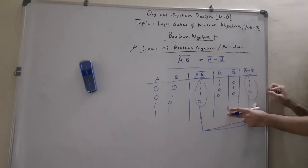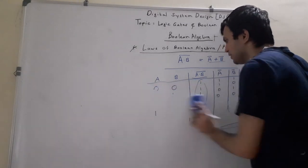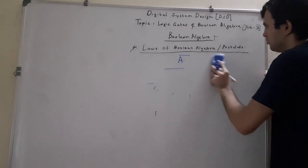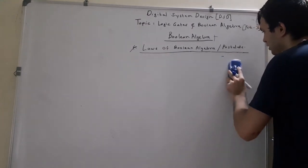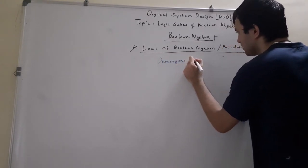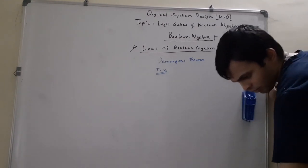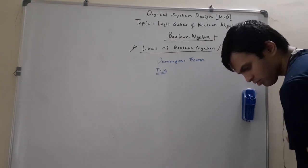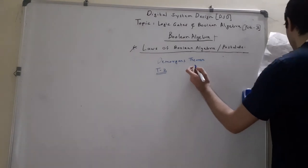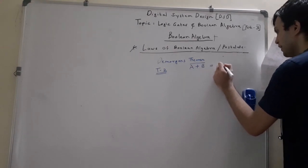LHS is equal to RHS is proved, so we have verified this theorem using the truth table. Now we move on to the second statement of De Morgan's theorem. The second statement states that A plus B the whole complement is equal to Ā dot B̄.